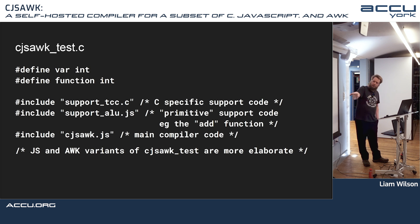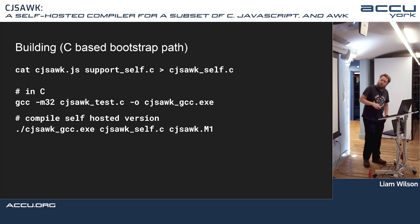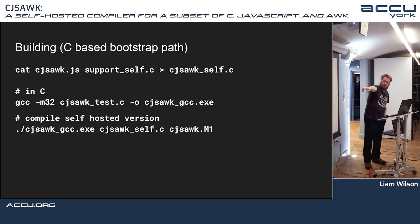The JavaScript and ARC versions are a bit more elaborate. Building the C-based version, you essentially just run GCC to compile the C-based version of it, get cjs.gcc, then build cjs.gcc against the self-hosted version of the compiler to get cjs.m1 macro assembly language output.